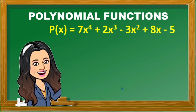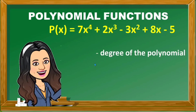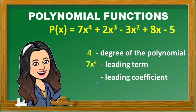Given p of x is equal to 7x raised to 4, plus 2x cubed, minus 3x squared, plus 8x, minus 5. If you observe, the given polynomial is arranged in descending powers of x. From this, we can identify: the degree of the polynomial is 4, the leading term is 7x raised to 4, the leading coefficient is 7, and the constant term is negative 5.